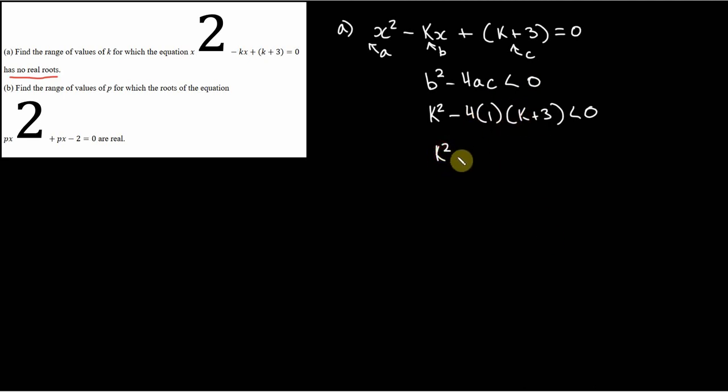And we end up with k squared minus 4k minus 12 is less than 0. And now we just need to basically solve this quadratic by factorizing it out. And we will have our, we'll be able to find our range of values of k.